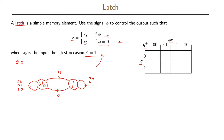In state zero with inputs zero-zero we stay in state zero; with zero-one we also stay in state zero; with one-one we go to state one; and with one-zero we stay in state zero. In state one with inputs zero-zero we stay in state one; zero-one also stays in state one; one-one stays in state one; and one-zero takes us back to state zero.